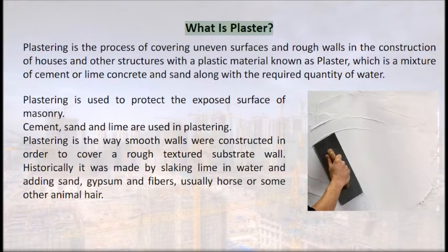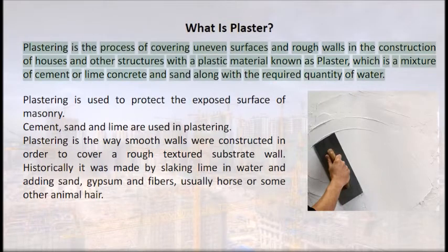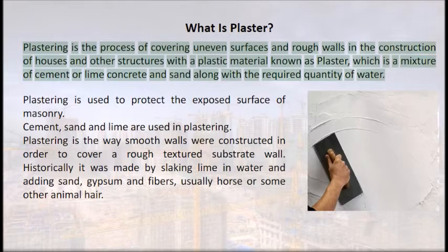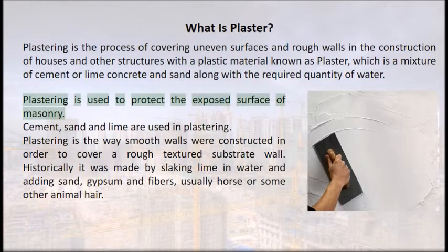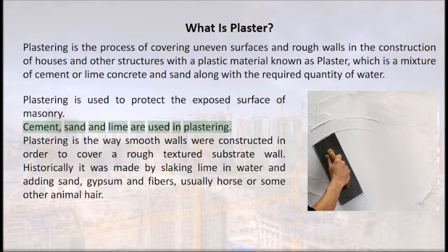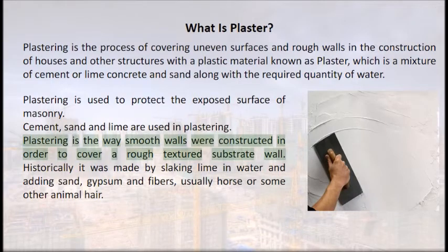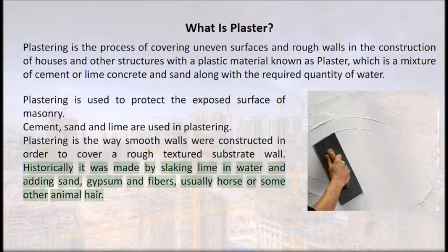Plastering is the process of covering uneven surfaces and rough walls in the construction of houses and other structures with a plastic material known as plaster, which is a mixture of cement or lime concrete and sand along with the required quantity of water. Historically, it was made by slaking lime in water and adding sand, gypsum, and fibers — usually horse or some other animal hair.